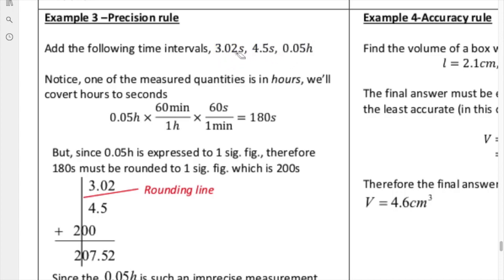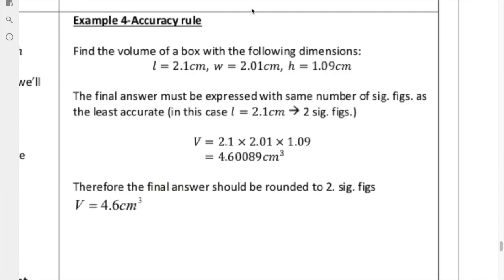So we've done three examples using precision. Now let's focus on accuracy. The accuracy rule, thankfully, is much easier to work with because simply, you just have to match the number of sig figs. So when we look at this question here, we're going to find the volume of a box, which is multiplication. So we have 2.1 centimeters by 2.01 centimeters by 1.09 centimeters. So when we look, this has two significant figures, three significant figures, and this one is three significant figures. That means that the final answer is going to be limited to two sig figs.